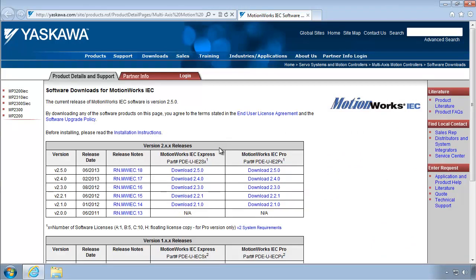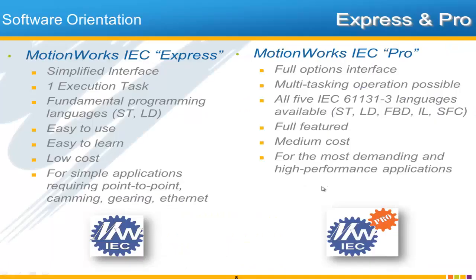Within version 2 there are two offerings: Express and Pro. Express has a simpler interface with fewer buttons and fewer options, whereas Pro has the full options interface — and Pro is the version we'll be using for all these videos. The main limitation of Express is being able to execute only one task. With MotionWorks IEC Pro we have the capability of multitasking, which adds a performance advantage to your application.